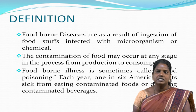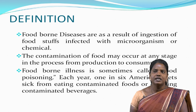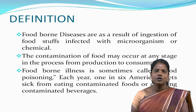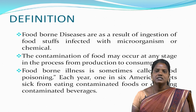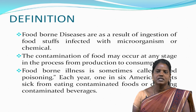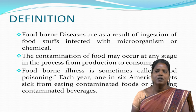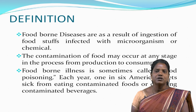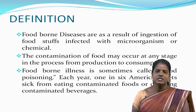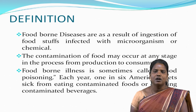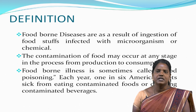What is meant by foodborne diseases? Foodborne diseases are a result of ingestion of foodstuffs infected with microorganisms or chemicals. Contamination of food may occur at any stage in the process from production to consumption. Foodborne illnesses, or foodborne diseases, is sometimes called food poisoning. Each year, 1 in 6 Americans get sick from eating contaminated foods or drinking contaminated beverages.